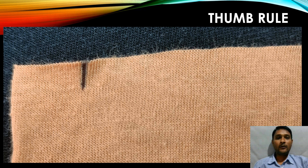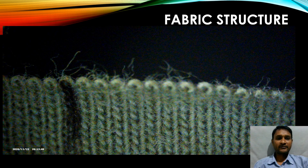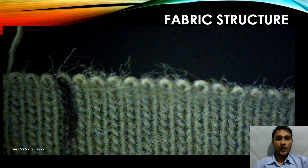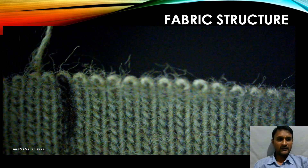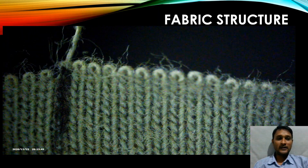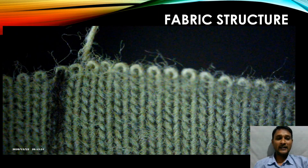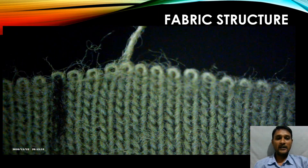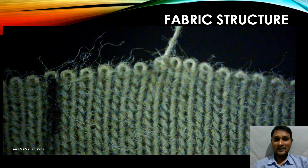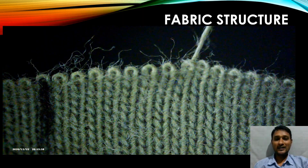Now we have unraveled the loose ends and drawn the vertical line, so we are going to start the knit fabric structure analysis. This is a magnified view of a single jersey fabric and we are unraveling course number one. What we are seeing here is the knit loop — the complete loop is getting unraveled from the previously knitted loop. This particular structure is called a knit loop.